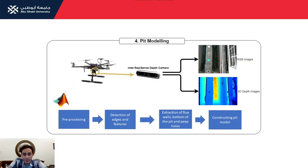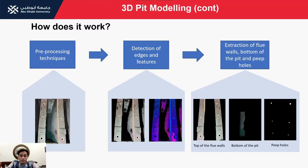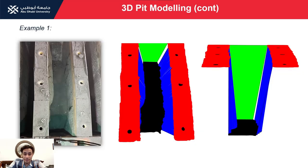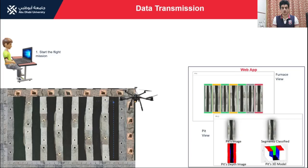Next, we discuss the 3D pit modeling subsystem. Our modeling algorithm is developed in MATLAB, starting with pre-processing techniques such as blurring and binarization. We then apply advanced computer vision algorithms such as the Hough transform to detect the edges of the top of the walls as straight lines. Using detected features — including the top of the walls, the bottom of the pit, and any holes present — we generate a 3D model of the pit, as shown in this example.